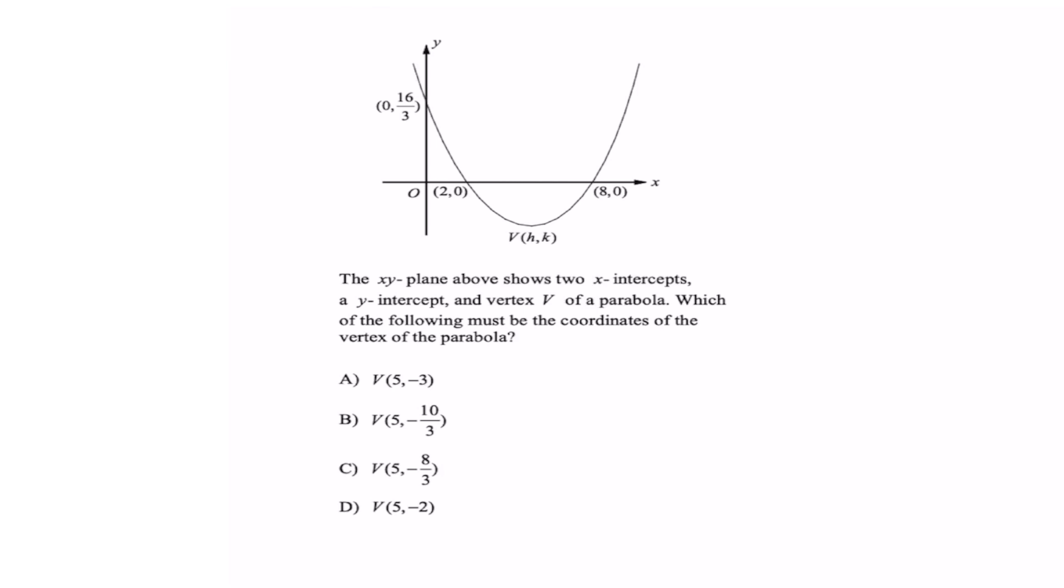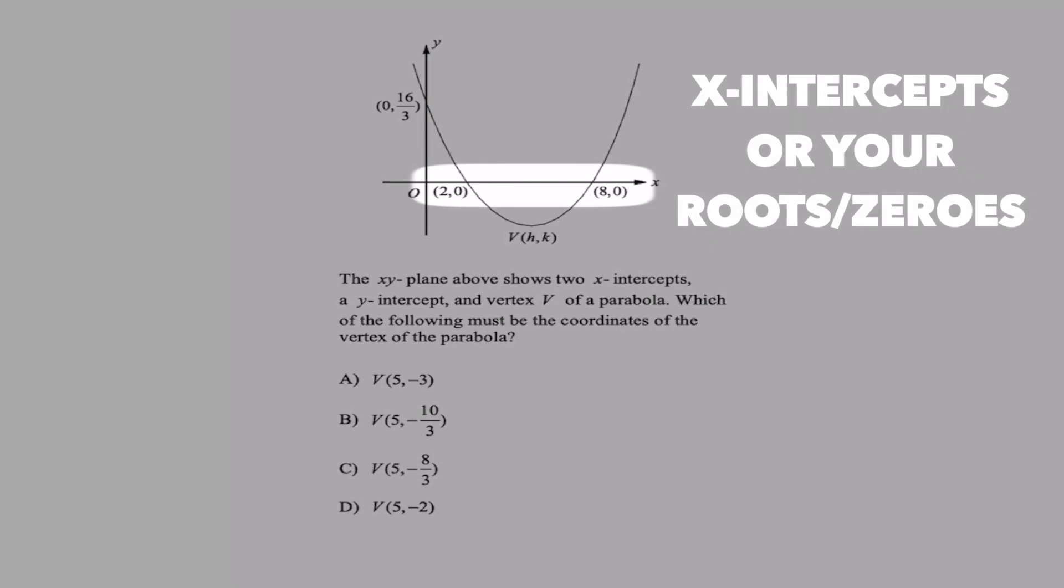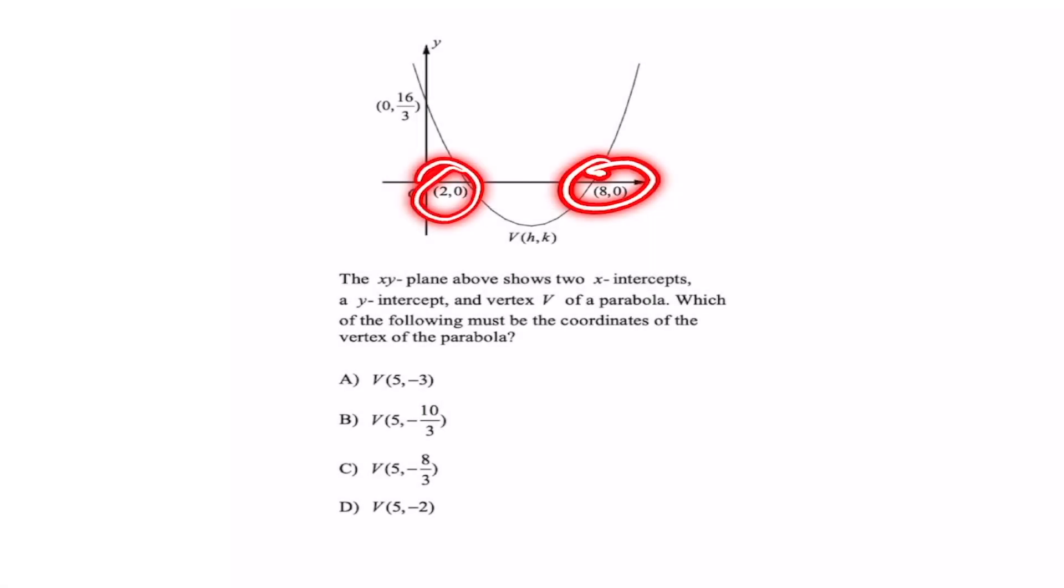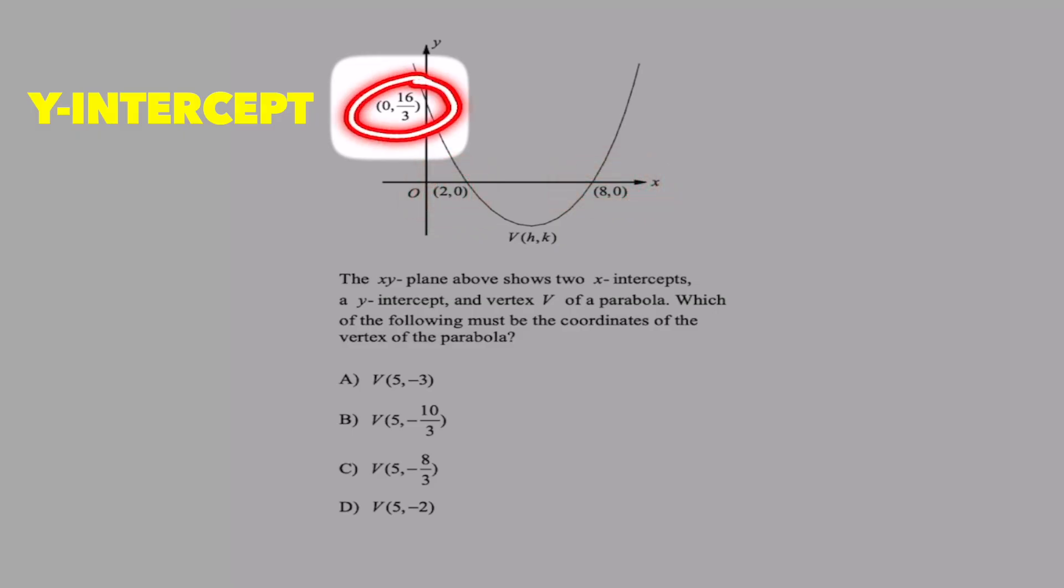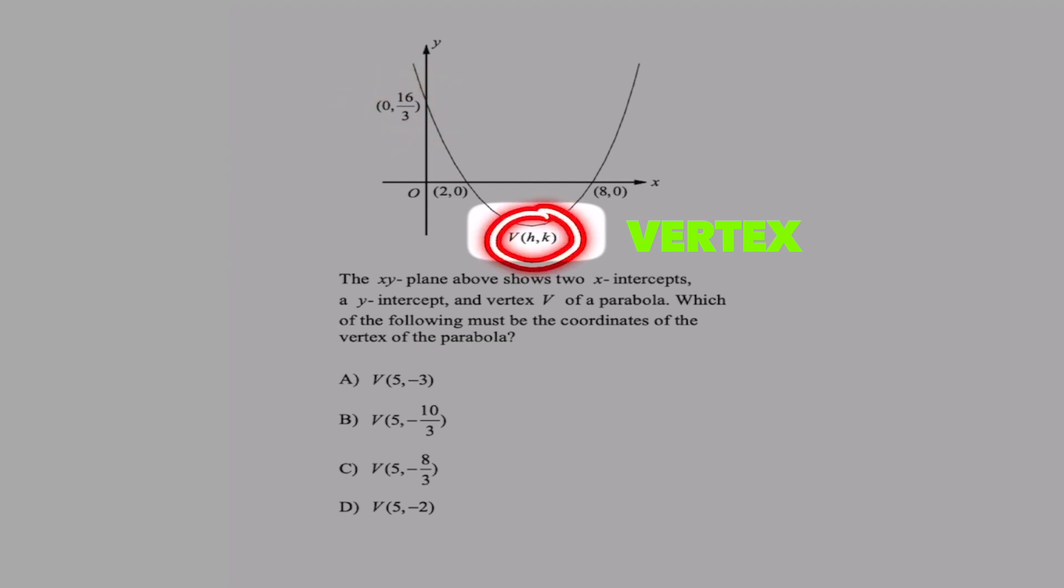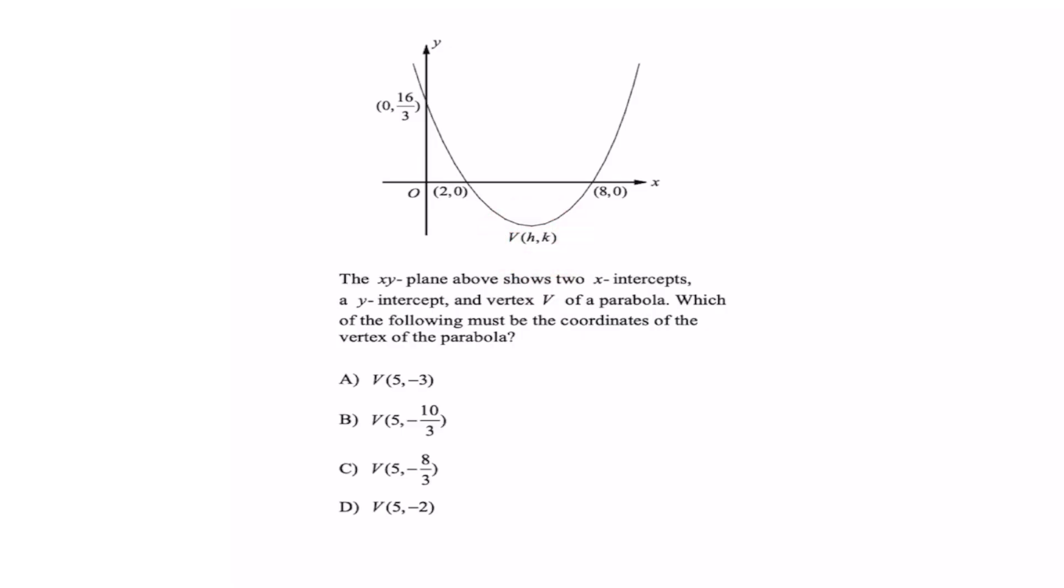Here's a really good quadratic question. The xy plane above shows two x-intercepts which are these right here, a y-intercept which has a fraction in it, and a vertex of the parabola h and k. Which of the following must be the coordinates of the vertex of the parabola?